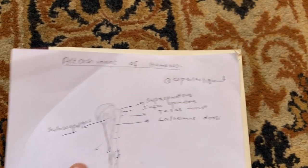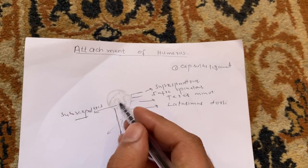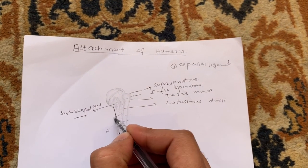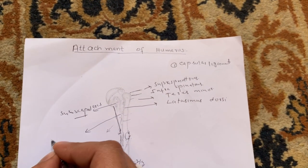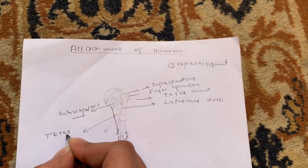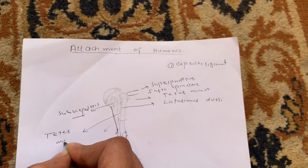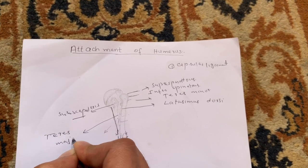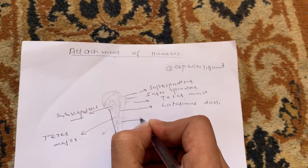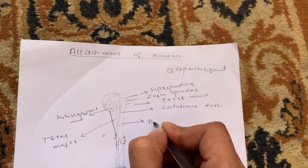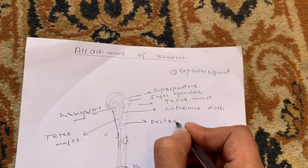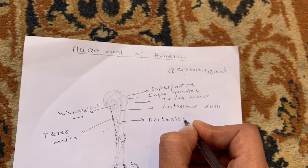The medial lip of the bicipital groove gives insertion to teres major, and the lateral lip gives insertion to pectoralis major.